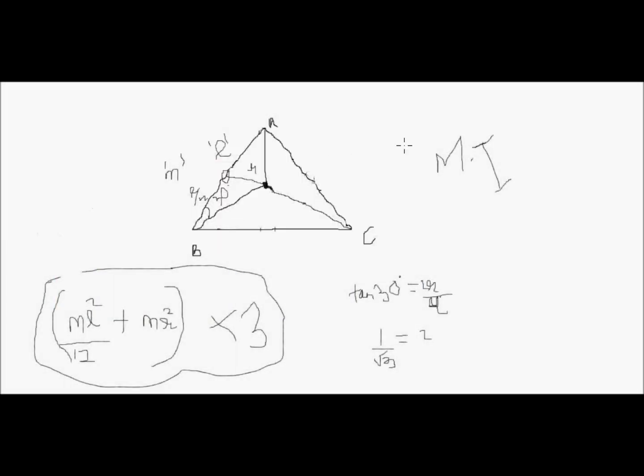In this video I am going to explain how to find the moment of inertia of an equilateral triangle about the axis passing through its center. This equilateral triangle is made up of 3 rods, each of mass m and length l.